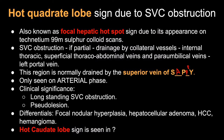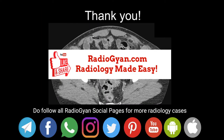When would we get a hot caudate lobe sign, and in what pathology? Hot caudate lobe sign is seen in Budd-Chiari syndrome. Budd-Chiari syndrome is obstruction of hepatic veins, which can be due to multiple causes. The caudate lobe has a separate venous drainage than the rest of the liver, which gives rise to multiple signs on imaging — one of them is the hot caudate lobe sign. So: hot quadrate lobe sign is seen in SVC obstruction, and hot caudate lobe sign is seen in Budd-Chiari syndrome.